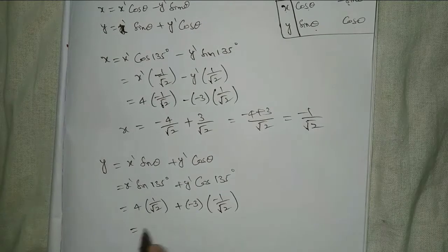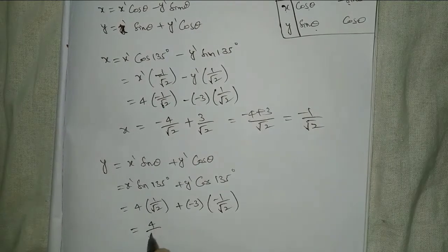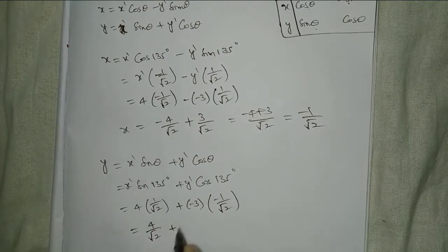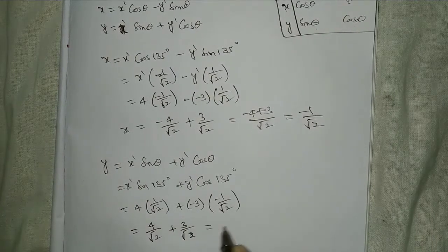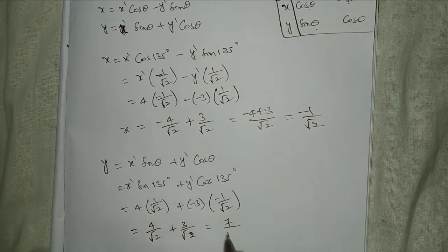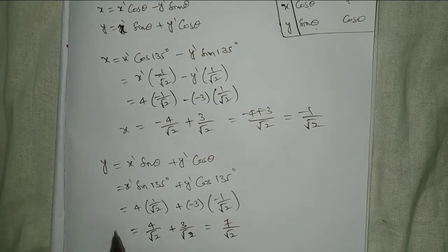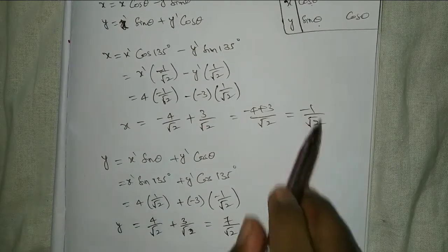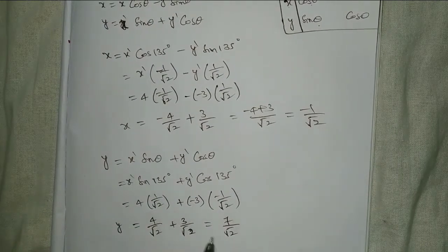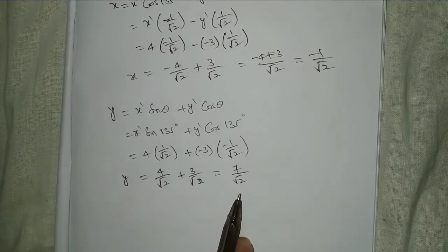4 by root 2 plus 3 by root 2, that equals 7 by root 2. This is y. So x equal to minus 1 by root 2, y equal to 7 by root 2.